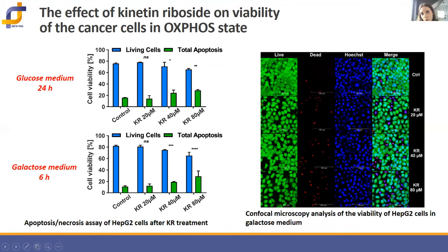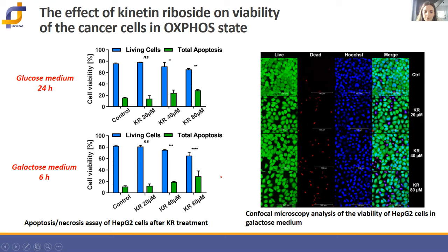Apoptosis and necrosis are two major processes leading to cell death. To investigate whether kinetin riboside induced apoptosis in HepG2 cells, we performed flow cytometric analysis. Kinetin riboside affected cell proliferation in a dose- and time-dependent manner. After 6-hour incubation with increasing concentrations in galactose medium, the percentage of apoptotic cells increased to almost 36%, compared to controls, while in glucose medium effects were less pronounced and visible only after 24 hours. Confocal microscopy analysis confirmed similar findings.